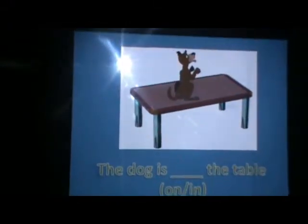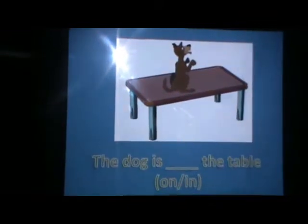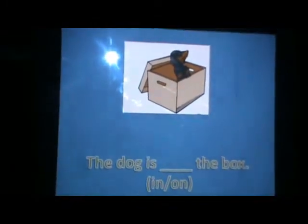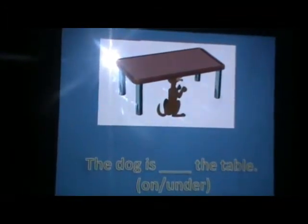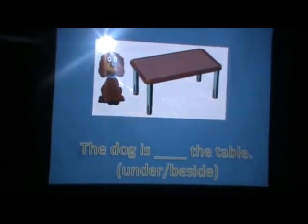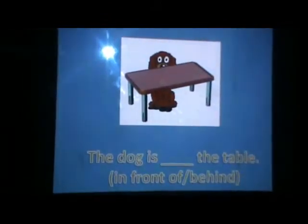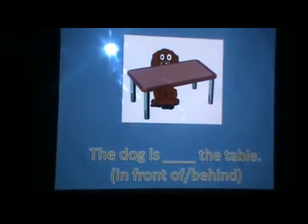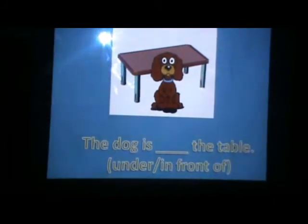So, please take a notebook and note down what's being shown here, and you have to fill in the blanks with position words. The dog is blank the table. The dog is blank the box. The dog is blank the table. The dog is blank the table. The dog is blank the table. The dog is blank the table.